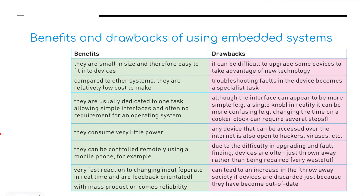Now the benefits and drawbacks of using embedded systems. Benefits: they are small in size and therefore easy to fit into devices. Compared to other systems they are relatively low cost to make. They are usually dedicated to one specific task, allowing simple interfaces and often no requirements for an operating system. They consume very little power. They can be controlled remotely — such as the Nest heating system and Philips lighting systems, which enable you to control things via your mobile phone. They have very fast reaction to changing inputs, operate in real time, are feedback-oriented, and with mass production comes reliability.